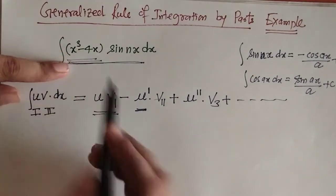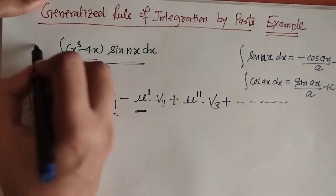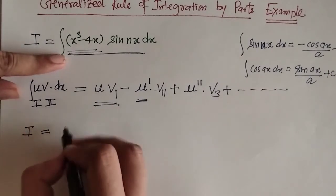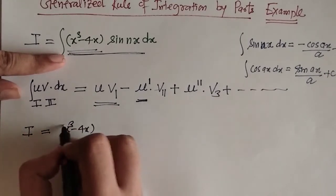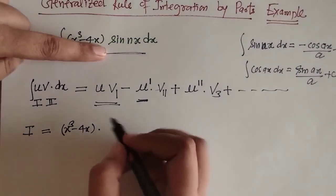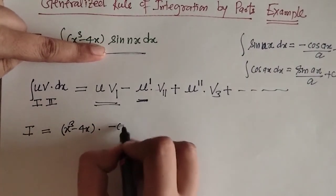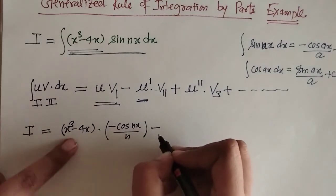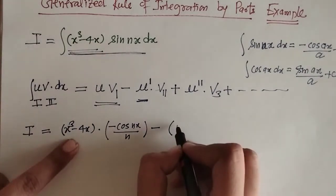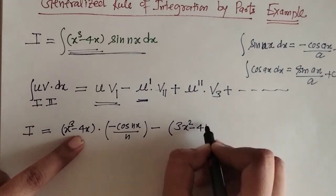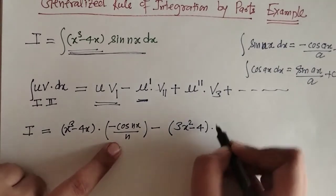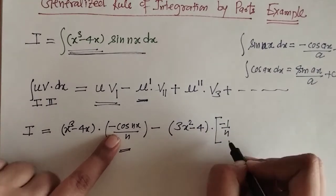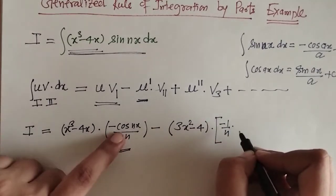The first function here is x³ − 4x. So we write I equals the first function (x³ − 4x) as it is into the sine integral, which is −cos(nx) upon n. Then minus the derivative of this, which is 3x² − 4, into the integration of that term, which is −(1/n) into the cosine integral, giving sin(nx) upon n.